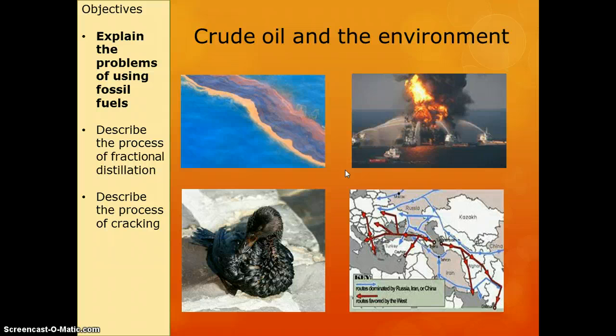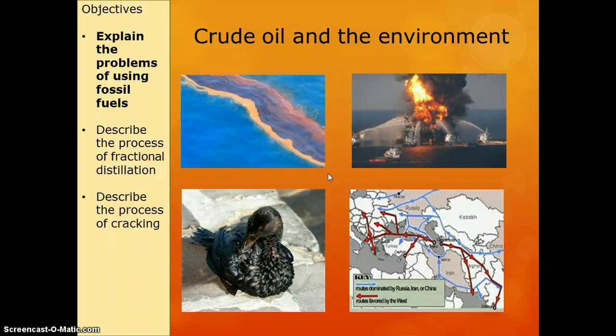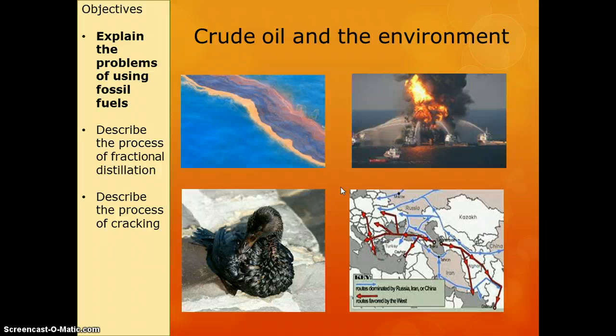The next issue with crude oil is damage to the environment if we spill it. What you see here is an oil slick in the ocean. Oil and water don't mix, so if we spill oil into the ocean, it persists and damages the wildlife. As you can see, we've got a picture of a bird that's been covered in oil. If birds' feathers get covered in oil, they can't fly.